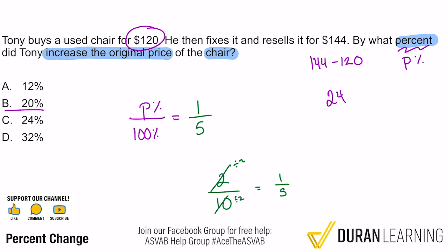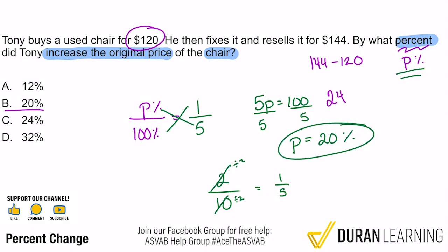Don't put yourself in a tough spot — simplify first. Now all we have to do is cross-multiply: 5P equals 100, then divide both sides by 5 to get P equals 20. And since P is a percent, that's 20%. The price went up by 20%, and we're done.